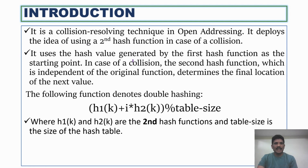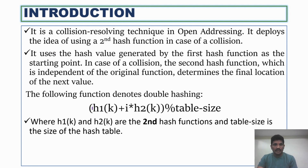Double-hashing uses the hash value generated by the first hash function as the starting point, generating one index. In case of collisions, we go for the second hash function; otherwise, we do not go for the second hash function. Let's see the formula for the second hash function.